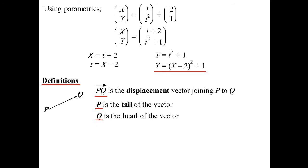Some other notations for vectors. A bold pronumeral — not a great one to use when you're handwriting your solutions, because how do you make it bold? So more commonly you'll see it as p with a tilde underneath it. That means we're talking about the vector p and not just the pronumeral p. There is a difference between the two.